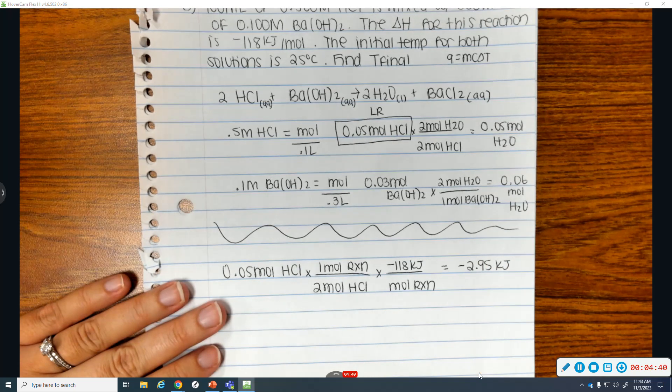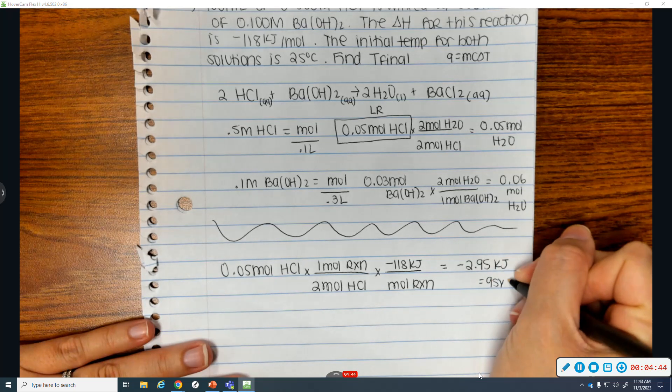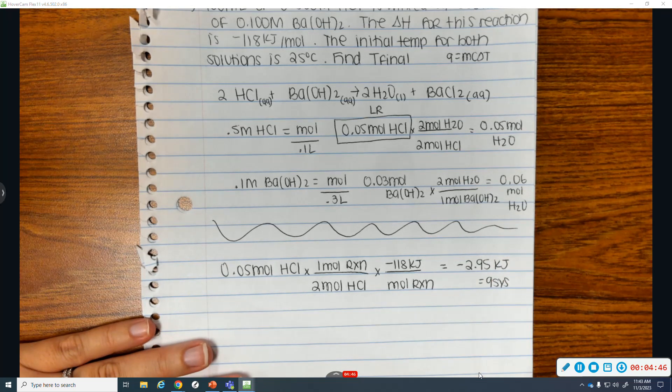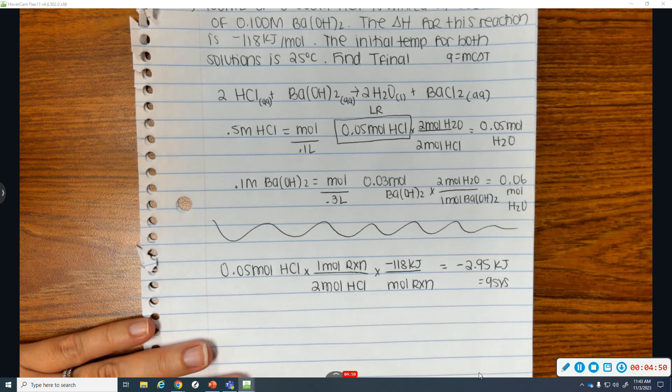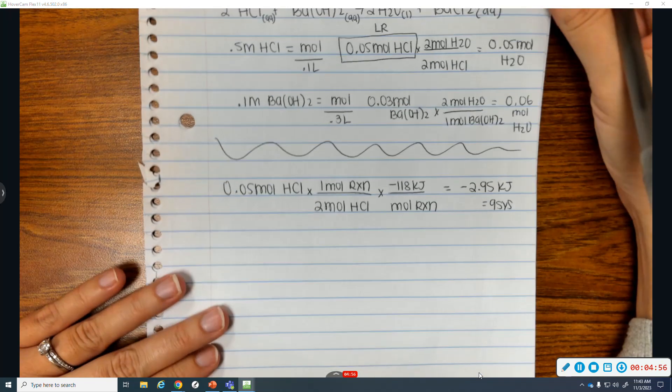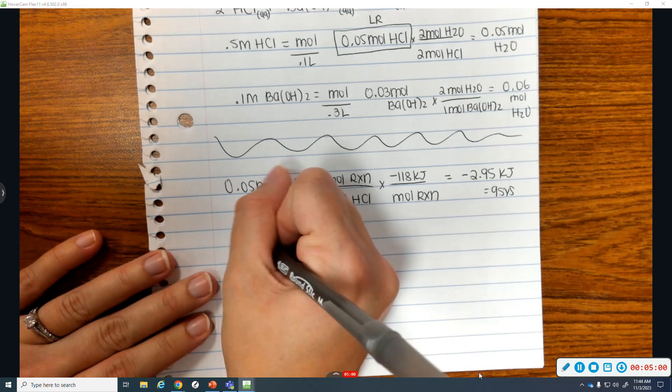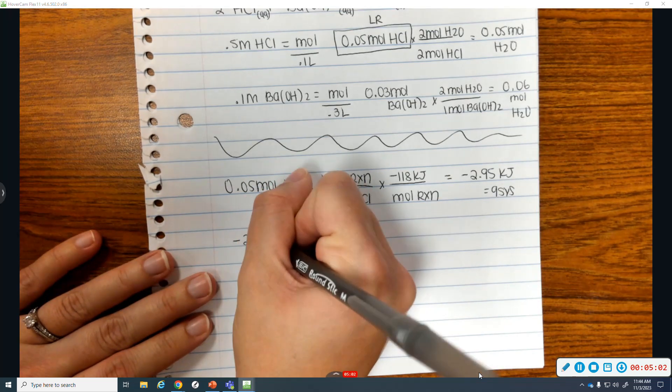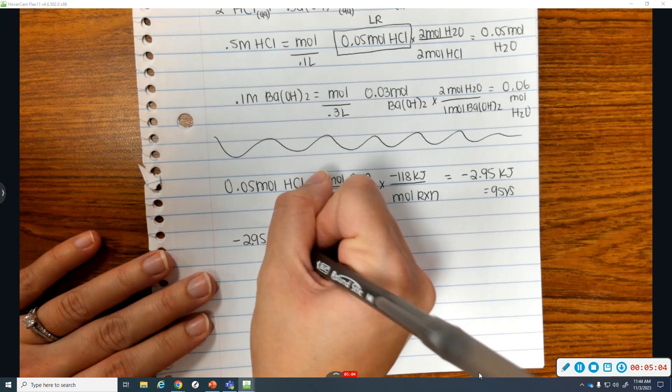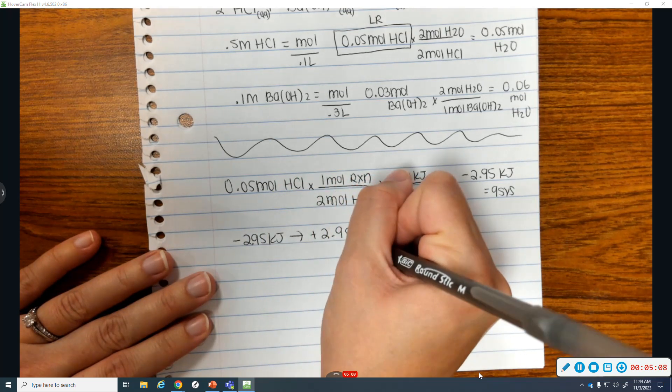And so, that is for this system. That is the heat. That is the heat that the system lost. Because it's an exothermic reaction. It gave off heat. I want it to be for surroundings. So, you need to take that kilojoule value and change the sign. So, plus 2.95 kilojoules.